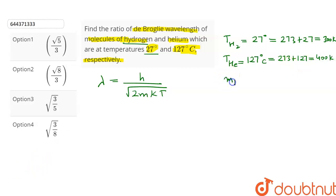We know that the mass of hydrogen molecule m_H2 is equal to 2 units and the mass of helium molecule is equal to 4 units. From this equation we can write the wavelength of helium is equal to h upon under root of 2 into the mass of helium into k into the temperature of helium.